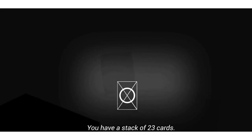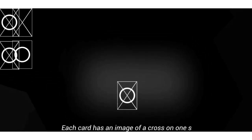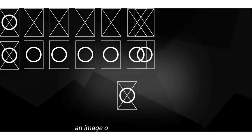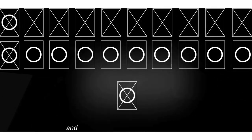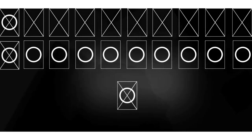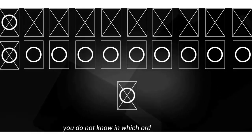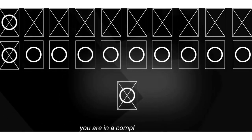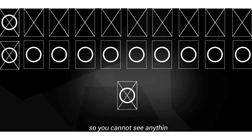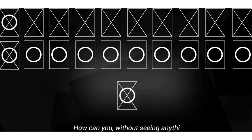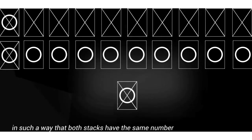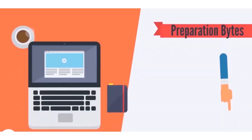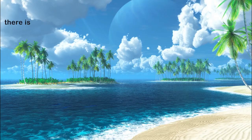You have a stack of 23 cards. Each card has an image of a cross on one side and an image of a circle on the other side. You know that 14 cards in the stack are lying with the cross up, and therefore nine cards are with the circle up. However, you do not know in which order the cards are. Moreover, you are in a completely dark room so you cannot see anything. How can you, without seeing anything, divide the stack of cards into two smaller stacks such that both stacks have the same number of cards with a cross up?